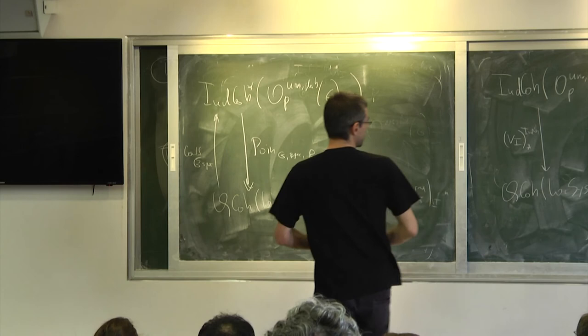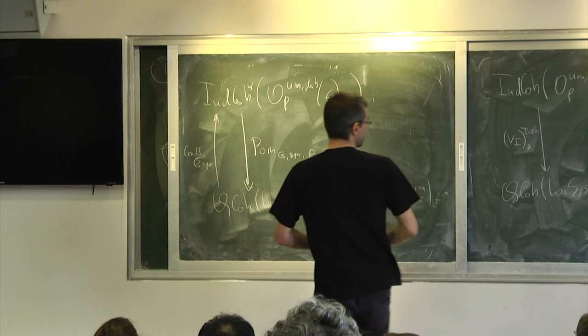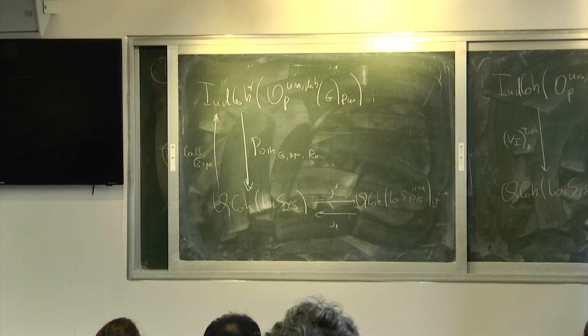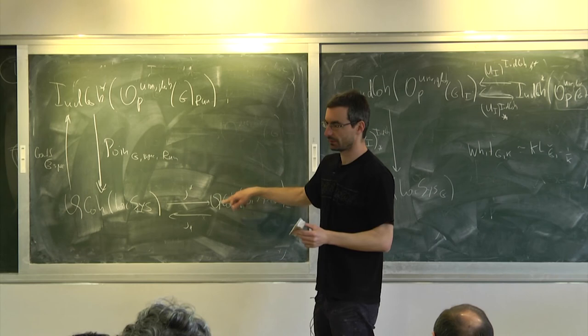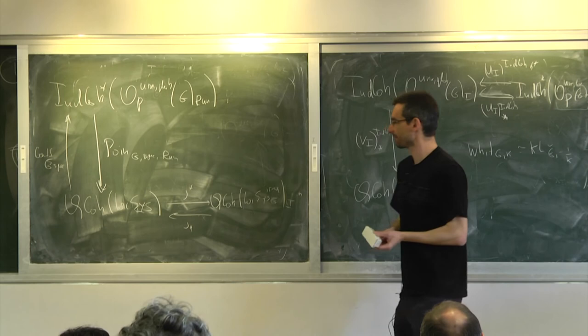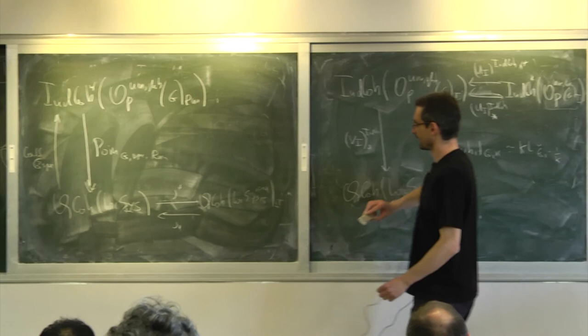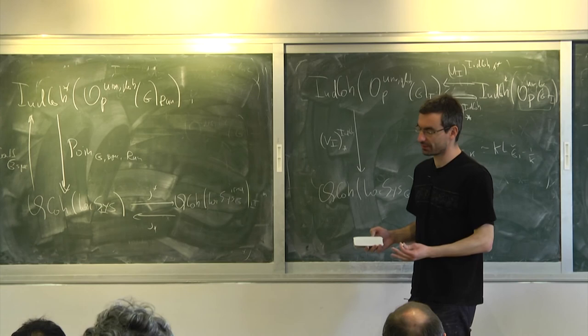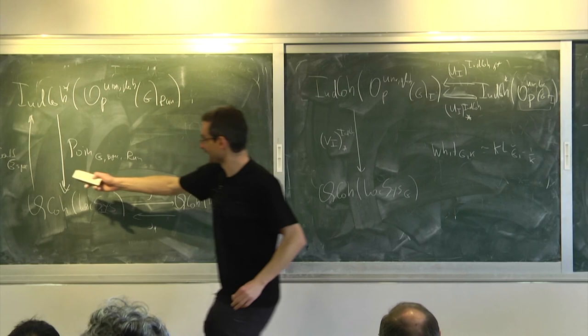The functor of coefficient spectral is always defined. You can always do v_i upper shriek and u_i lower star. It's just that these functors are adjoint only over the irreducible locus. Local systems don't admit a reduction to the Borel — or to a parabolic. For any map you have both F lower star and F upper shriek; they're adjoint only if the map is proper. So the functor of coefficient is defined, but it's not adjoint to Poincaré away from the irreducible locus.